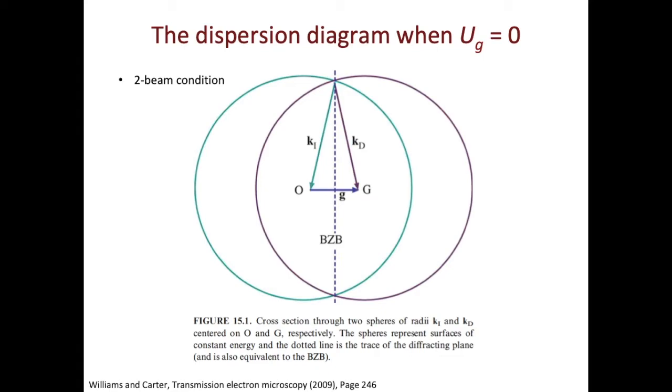In fact, in real life, you wouldn't see these two spheres intersecting with each other. What we have here is based on the assumption that Ug, the inner potential of the crystal, is equal to zero.